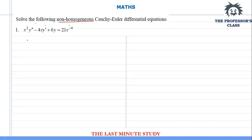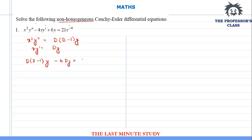We solve this by substituting the value. I will substitute the value of x²y'' as D(D-1)y and xy' as Dy in the above equation. Let's find out the general solution. I will get D(D-1)y minus 4 times Dy plus 6y equals 0.